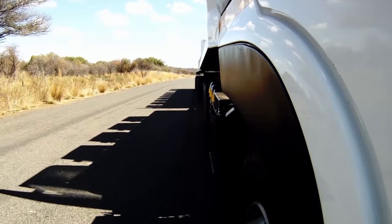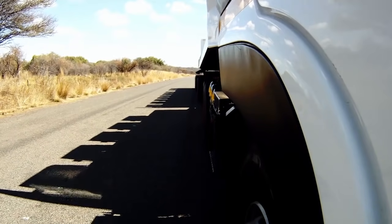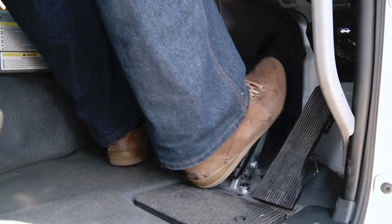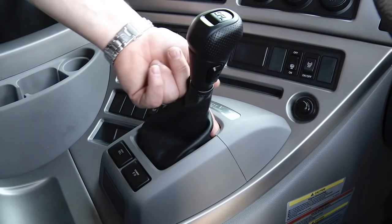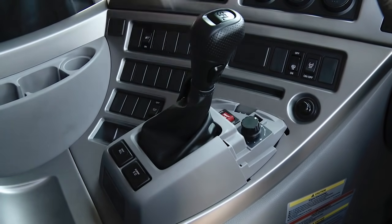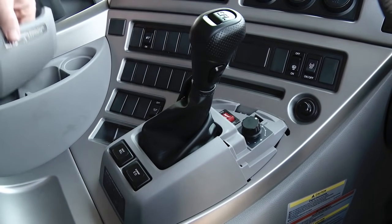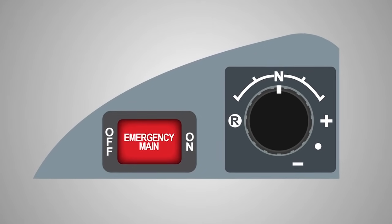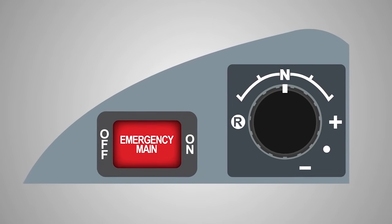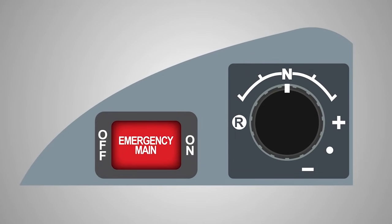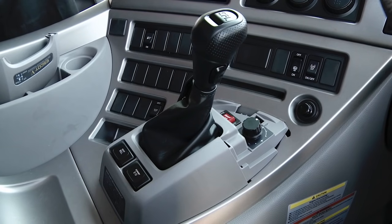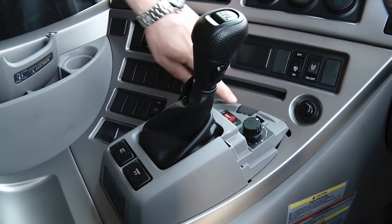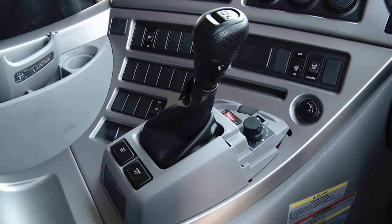Park the vehicle safely, depress the service brake pedal and remove the front cover of the shift tower. Locate the emergency gear shift switch and switch to neutral position before switching the emergency main switch to the on position. Then set the emergency main switch to the on position.